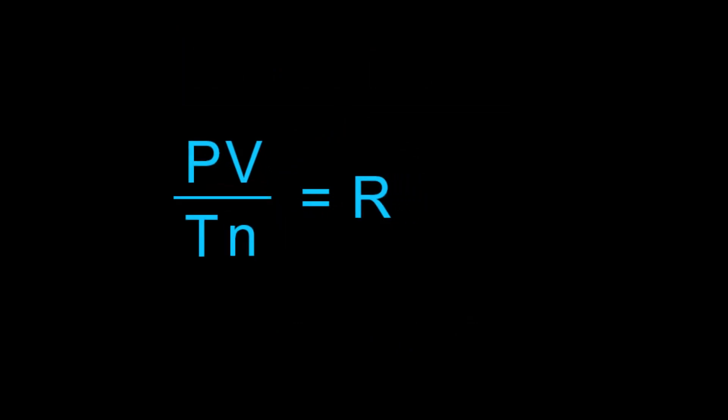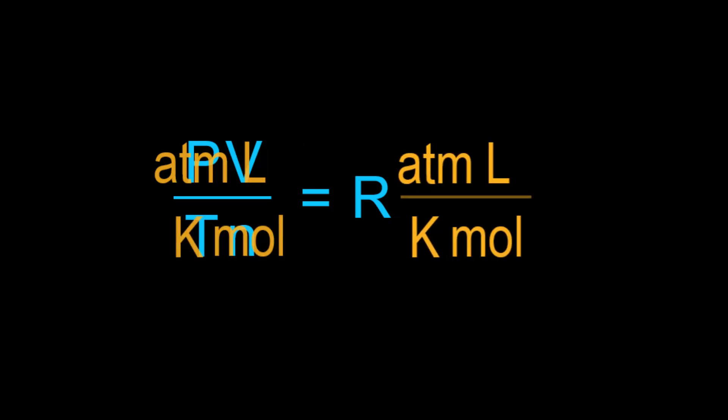Let's go back to this form of the equation so we can determine two common values of R used in textbooks. The numerical value of R depends on the units used, and so using atmospheres, liters, Kelvin, and mole for P, V, T, and N gives the unit of R.